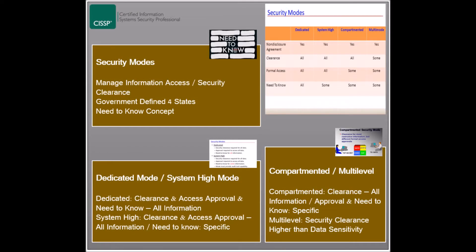The third security mode is the compartmented mode, where users must have security clearances to access all the information on the system. However, they must also acquire access approval for each specific piece of information, in addition to having a valid need to know for all the information they need to access. Compartmented mode workstations is one implementation of this security mode, where users can access multiple compartments of data at the same time.